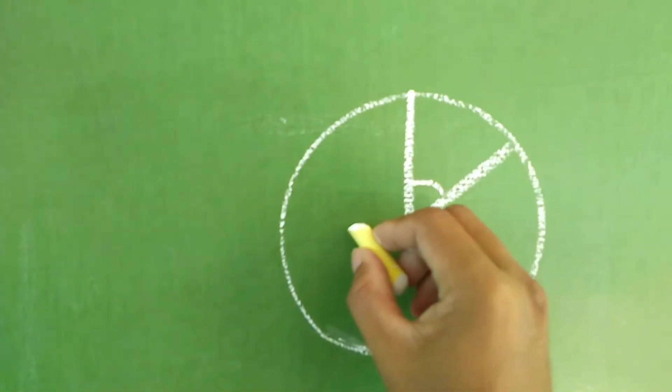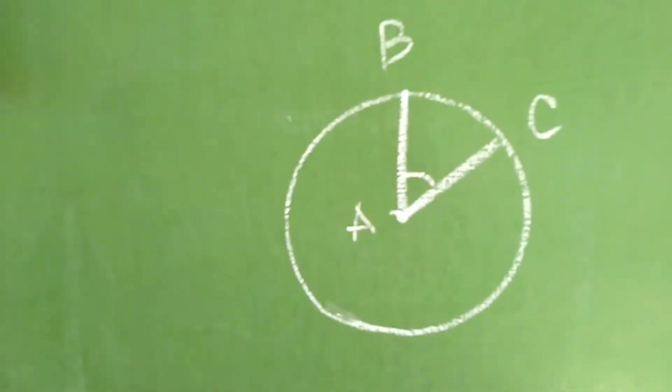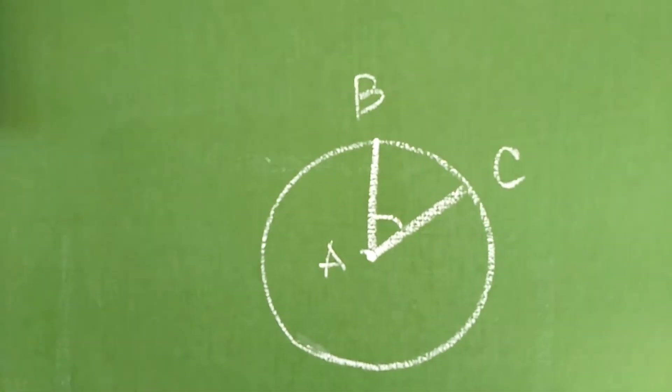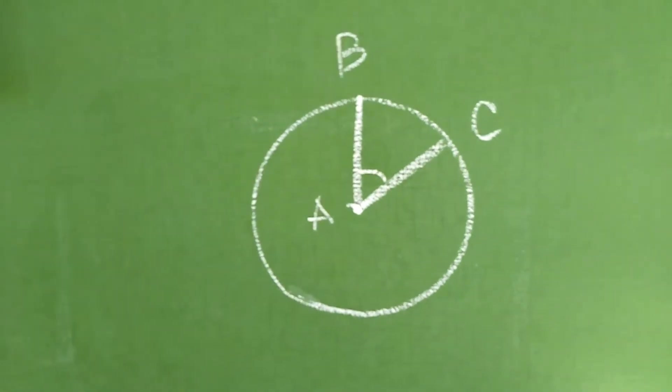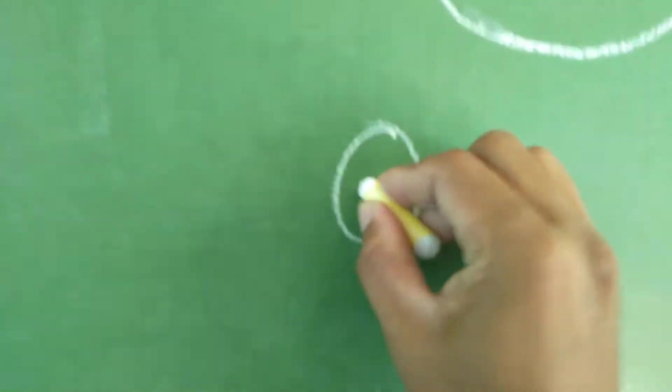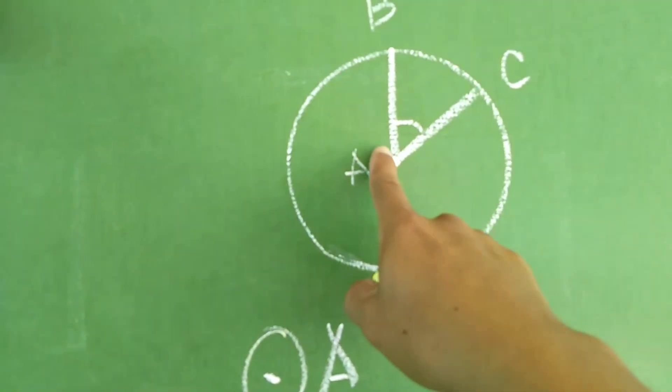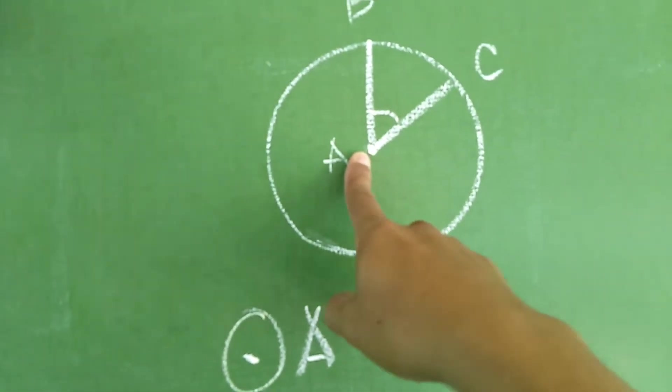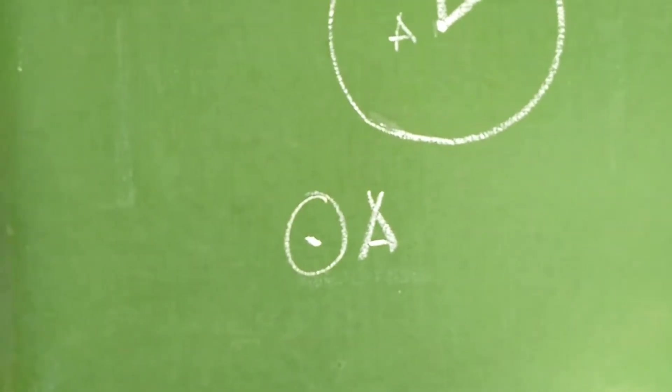Suppose this is an angle A, B, and C. Okay, sa angle B, A, C. Okay, ito po yung ating mga symbol. Ang pagbasa po natin dito is circle A. Ito po yung ating circle A. Yung pangalan po ng center, yun po ang magiging pangalan po ng ating circle. So, this is circle A.